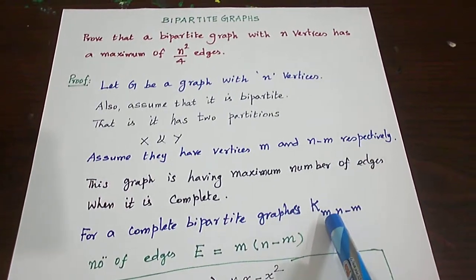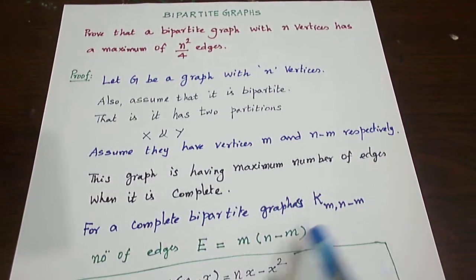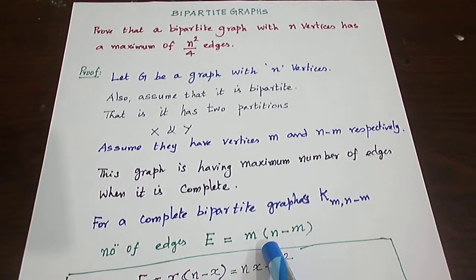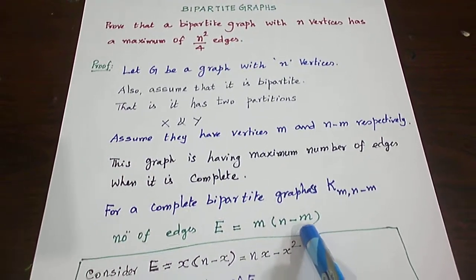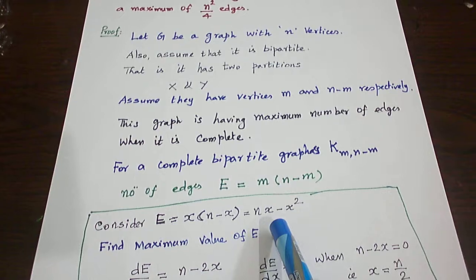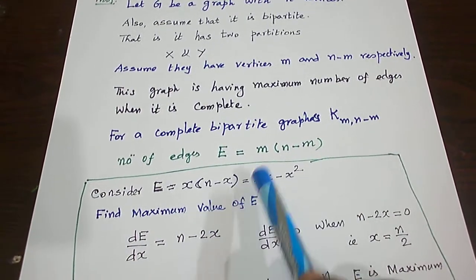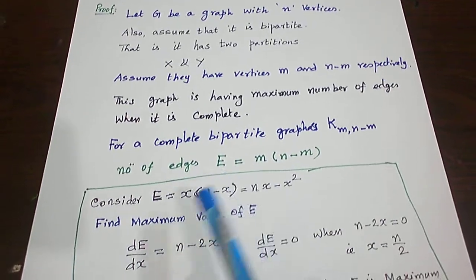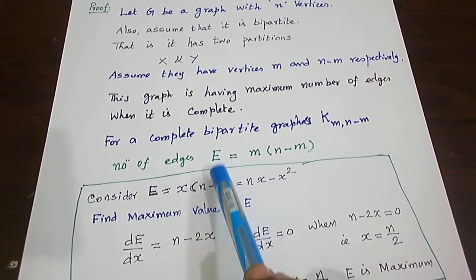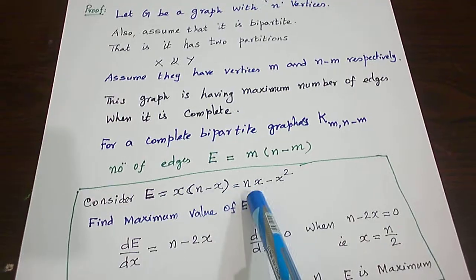The number of edges is the product of the number of vertices: m into n minus m. Let us use the result from ordinary calculus to find the maximum for a particular variable. I take E equal to x into n minus x, which is nx minus x².